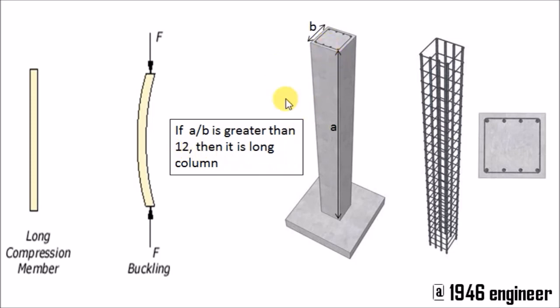So the next question is what is buckling? See, in this long column, if two compressive forces act against the column and this exceeds the critical load, then this long column tends to bend like this. This is called buckling.